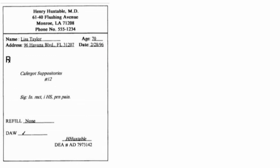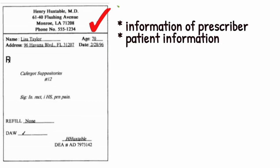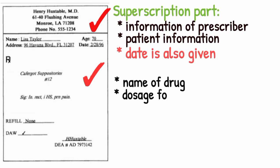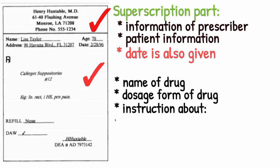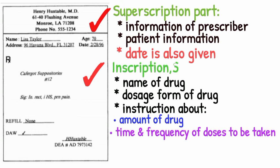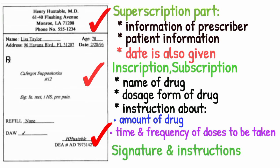Now I'm going to show you a sample prescription that will help you understand the components in a better way. In this sample, the head region contains information about the prescriber and the patient — that is the superscription part — and the date is also given. The middle portion contains the name of the drug, dosage form, and instructions about the amount, time, and frequency of doses, covering inscription, subscription, and transcription. At the end is the signature and instruction part.